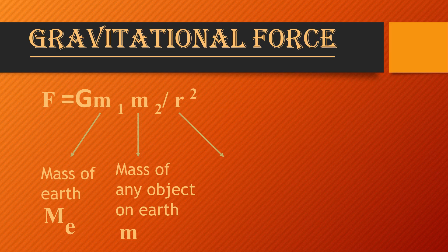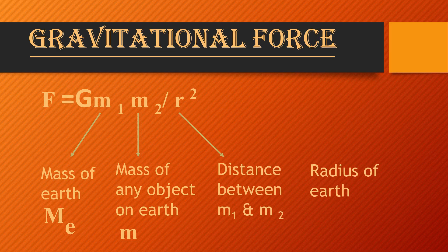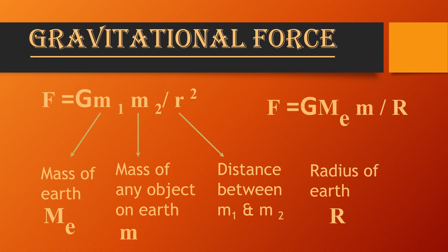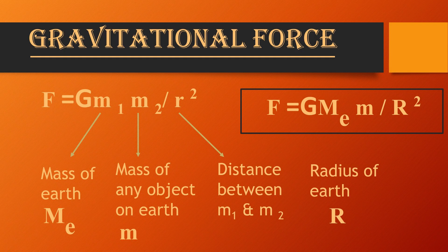R is the distance between the two objects, and we consider this distance as the radius of Earth. Since the shape of Earth is spherical, the radius remains the same and is a fixed quantity. So we rewrite the equation as the specified form of the law of gravitation: F = G·ME·m / R². You need to memorize this formula because it is the final form of the law of gravitation.